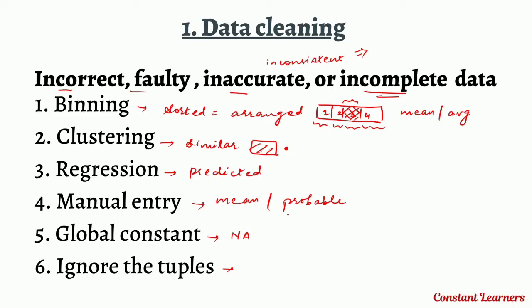Global constant means that if there is a missing value, we can write 'not available' or 'any' in place of the empty cell. Ignoring the tuples means that if a tuple has multiple cells with missing values, we can completely ignore those tuples.